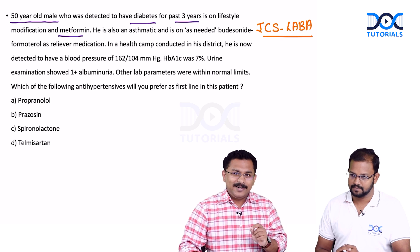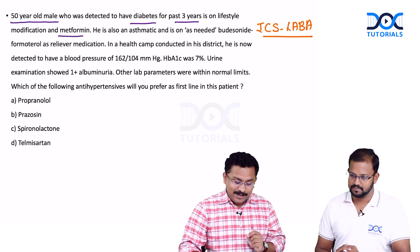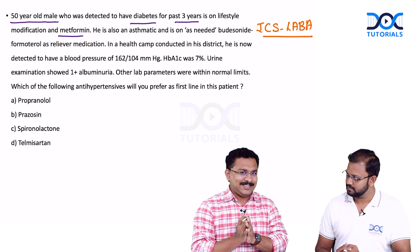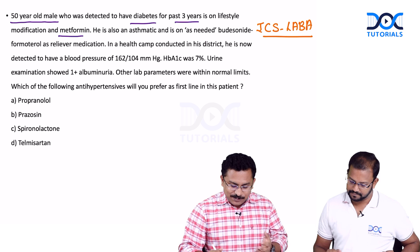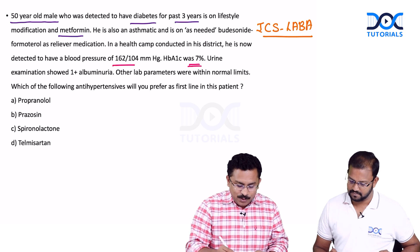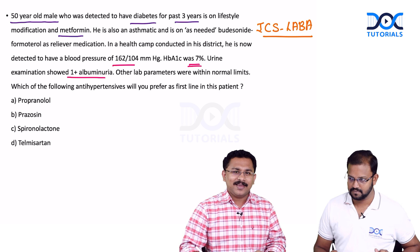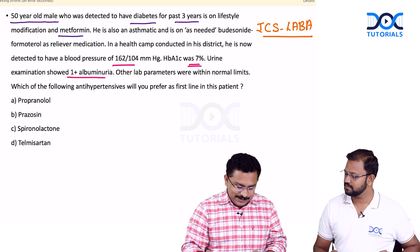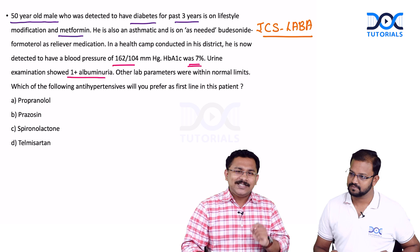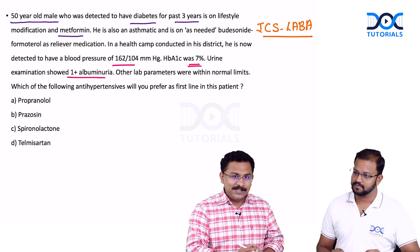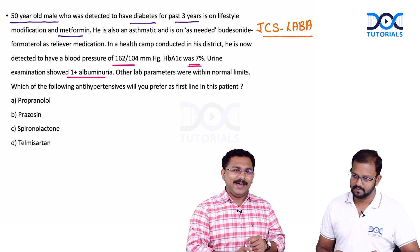In a health camp conducted in his district, he is now detected to have a blood pressure of 160 systolic and 104 diastolic — a newly detected systemic hypertension. On subsequent evaluation, the HbA1c was 7% and the urine examination showed 1+ albuminuria. Other lab parameters including liver function test and renal function test were within normal limits. The question is: which antihypertensive will you prefer as first line in this patient? The options are propranolol, prazosin, spironolactone, and telmisartan.